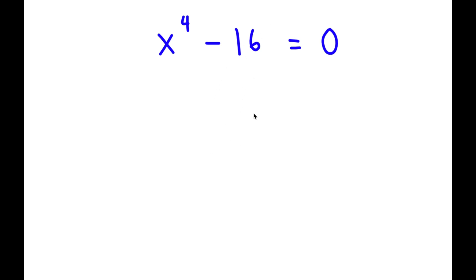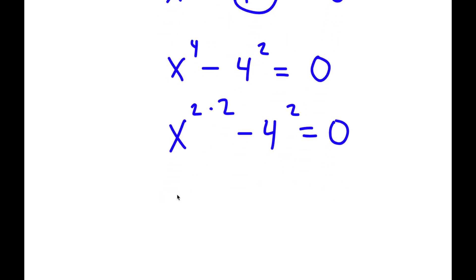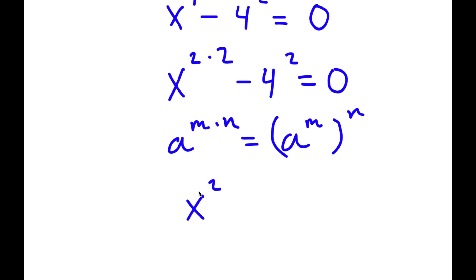In this problem I have x to the power of 4 minus 16 is equal to 0. To solve this I'm going to first rewrite 16 as 4 to the power of 2. So now I have x to the power of 4 minus 4 to the power of 2 is equal to 0. Now x to the power of 4 is the same thing as x to the power of 2 times 2, and using the rule a to the power of m times n equals a to the power of m to the power of n, x to the power of 2 times 2 equals x squared to the power of 2.